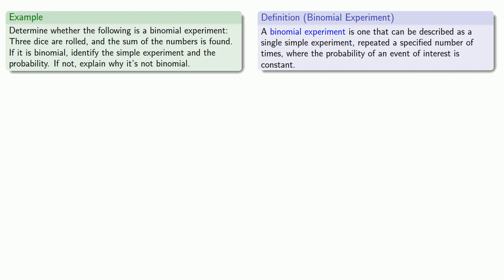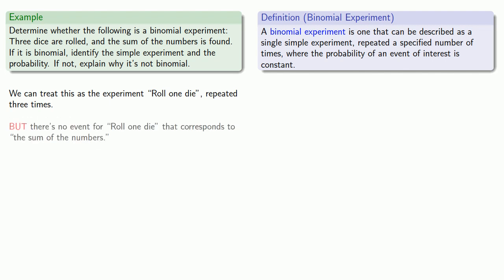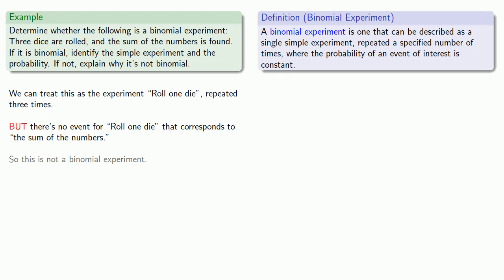How about this experiment? We roll three dice and the sum of the numbers is found. We can treat this as the experiment roll one die repeated three times. But there's no event for roll one die that corresponds to the sum of the numbers. That means we can't even identify the event of interest, let alone determine whether the probability is constant. So this is not a binomial experiment.